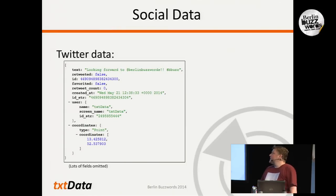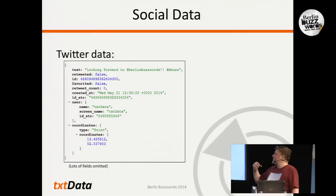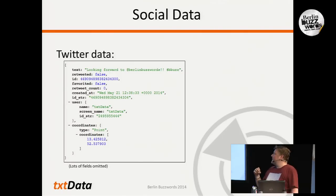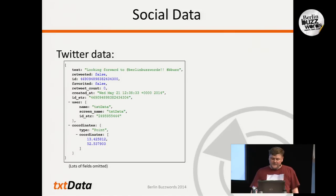Here's something we get from Twitter. There's just a text: 'Looking forward to Berlin Buzzwords' — that was me posting that last Wednesday. At that point it wasn't retweeted or favorited by anyone. But you can see it has a unique ID, a timestamp, the user is given, and you have the coordinates. So that's important for us — we'll come back to this.